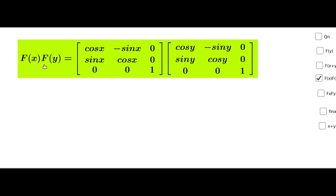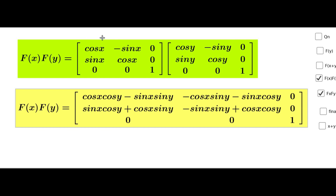f of x is the matrix [cos x, -sin x, 0; sin x, cos x, 0; 0, 0, 1]. f of y is the matrix [cos y, -sin y, 0; sin y, cos y, 0; 0, 0, 1]. Now multiply the first matrix rows by the second matrix columns.